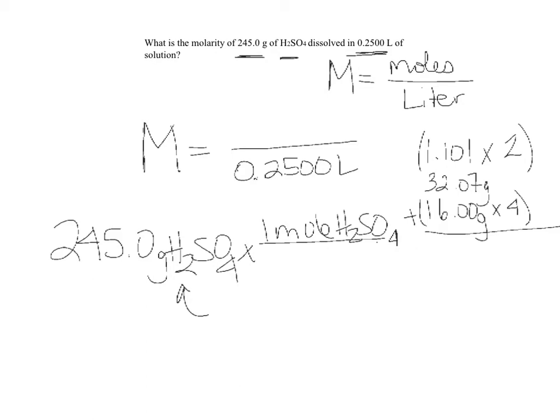So 1.01 times 2 is 2.02, plus 32.07 is 34.09, plus 16 times 4 gives us a total mass of 98.09 grams of H2SO4 in every mole of H2SO4.